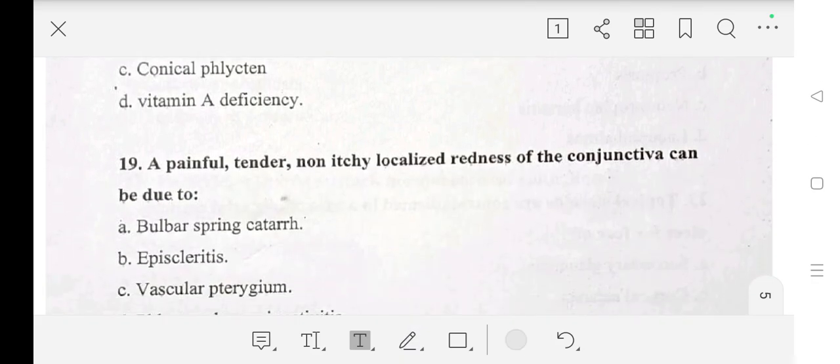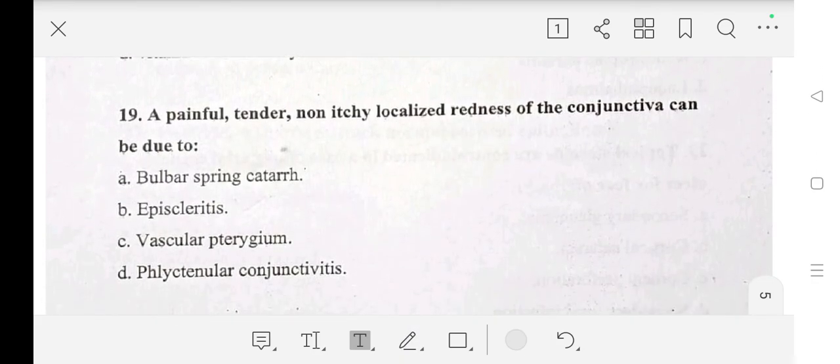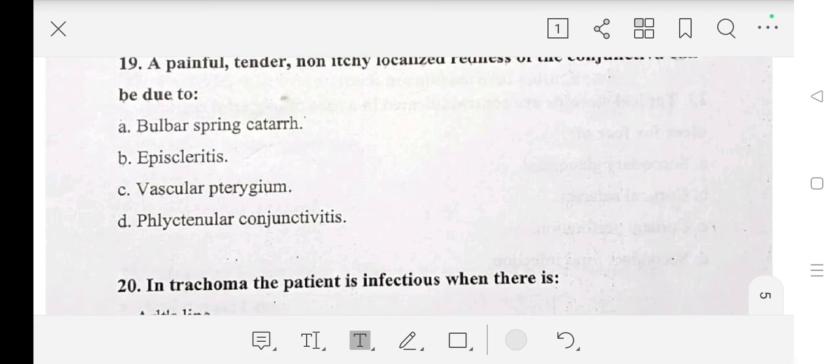Question number nineteen: a painful, tender, non-itchy localized redness of the conjunctiva can be due to bulbar spring catarrh, episcleritis, vascular pterygium, or phlyctenular conjunctivitis? Answer is episcleritis.